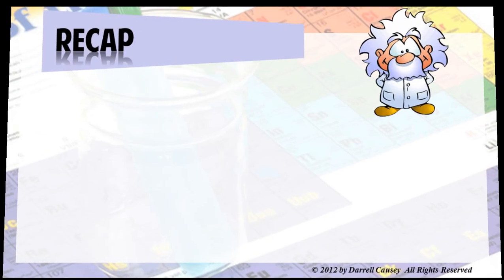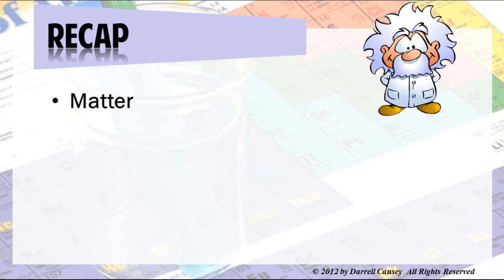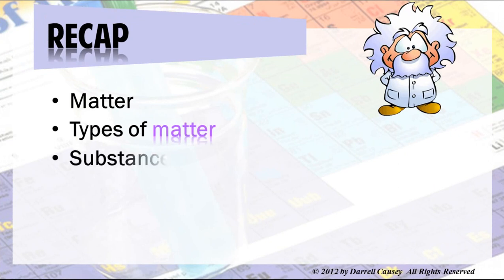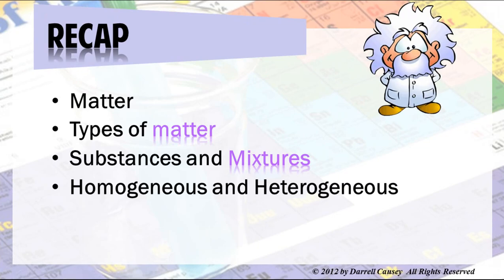Let's recap. We've talked about matter, the types of matter, substances and mixtures, homogeneous and heterogeneous mixtures, and colloids. Go over this again and listen to it as many times as you need to get the ideas down. It's imperative, when we talk about physical and chemical properties, that you understand matter and the divisions of matter.